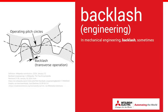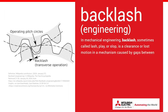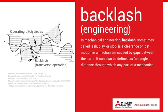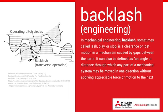So what is backlash? In mechanical engineering, backlash — sometimes called lash, play, or slop — is a clearance or lost motion in a mechanism caused by gaps between the parts. It can also be defined as an angle or distance through which any part of a mechanical system may be moved in one direction without applying appreciable force or motion to the next part in a mechanical sequence. Those definitions are a little abstract, so let's take a look at an example.